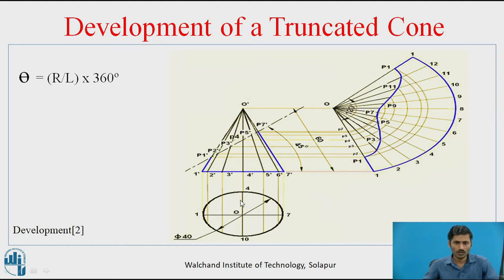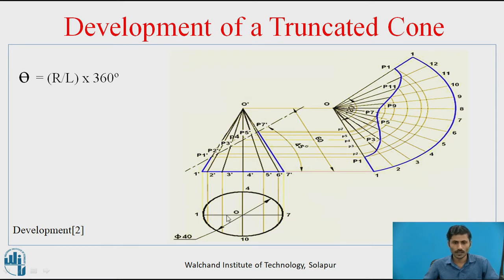Since the base circle is resting on HP, the top view will be a circle of 40 mm diameter, with the apex point at center. The axis will be seen as a point in the top view. We divide this base circle into 12 points to get a smooth profile — dividing the 360-degree circle by 12 gives 30 degrees each — and name the intersection points 1, 2, 3, 4, and so on.